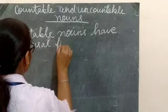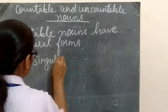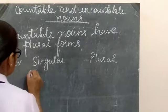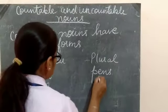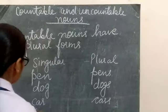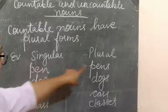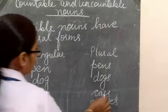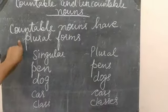Plural forms. For example, singular and plural: a pen — pens; dog — dogs; car — cars; class — classes. You can see I made the plural form by adding 's' at the end, and here 'es'. This is car and this is cars. This is class and this is classes. So these are the singular and these are the plural. So countable nouns have plural forms.